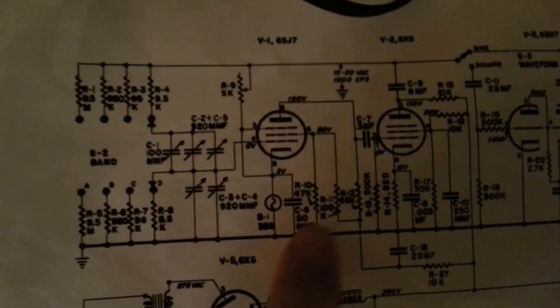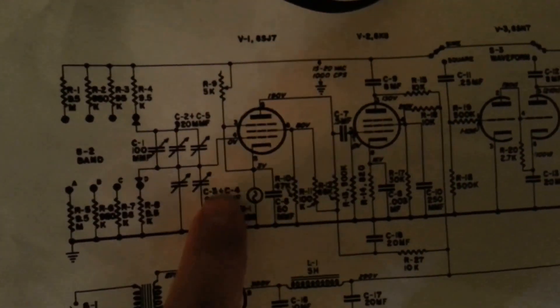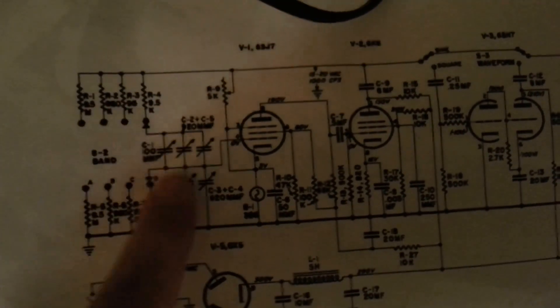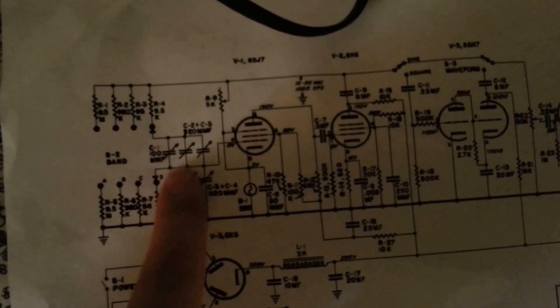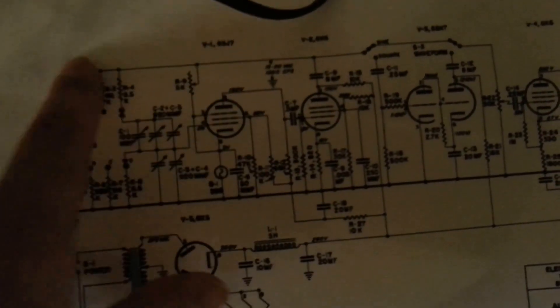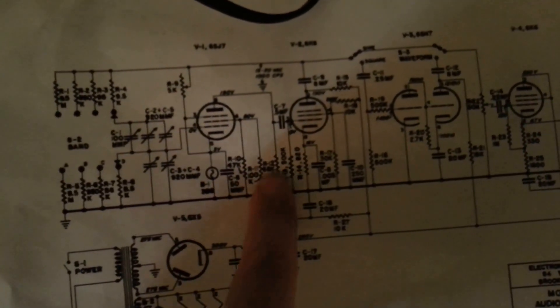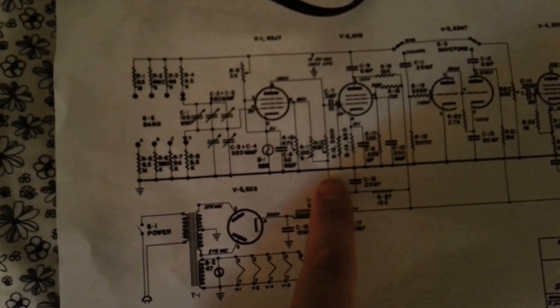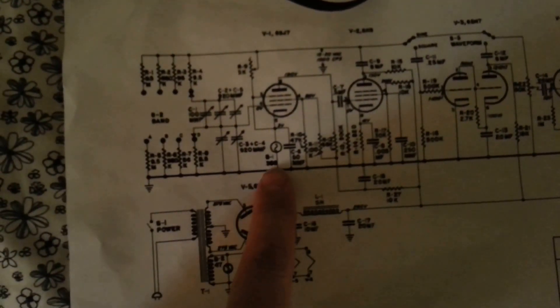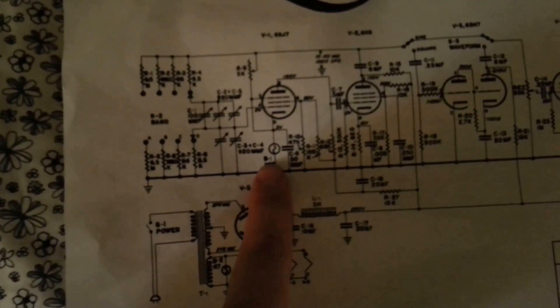And this circuit right here, this is your band selection. All these resistors right here form a type of voltage controlled oscillator known as a Wien bridge and it is stabilized by this lamp.